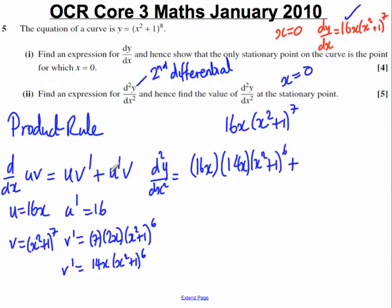We're going to add u', which is 16, times v, which is (x² + 1)⁷.